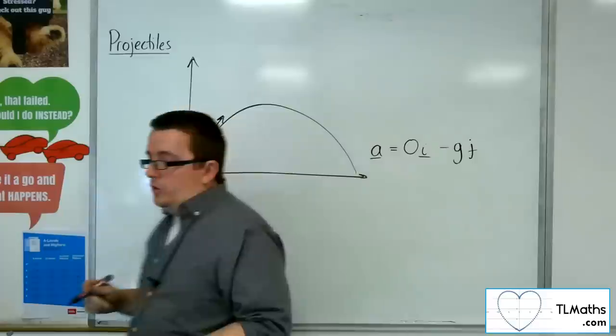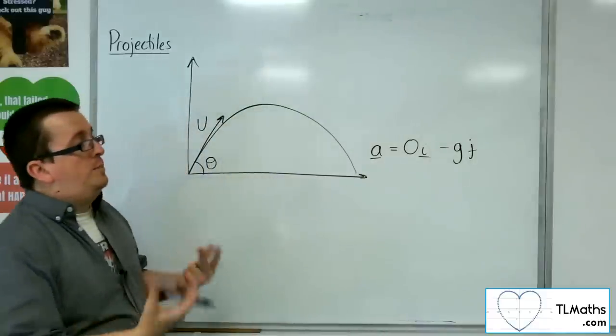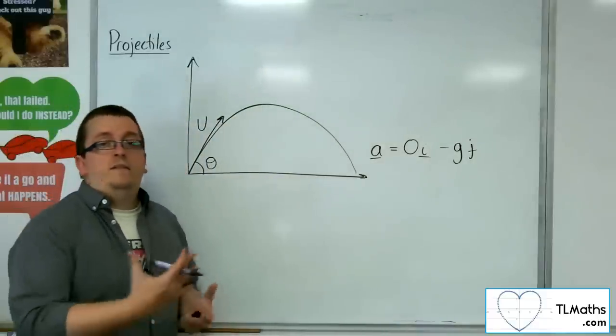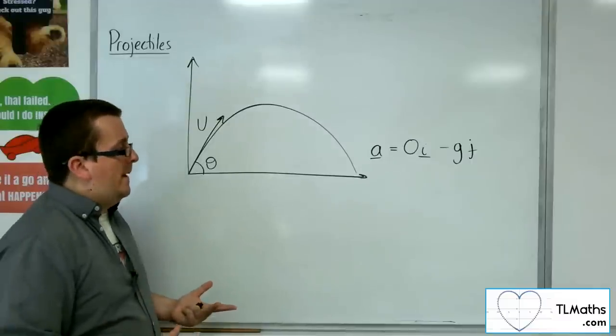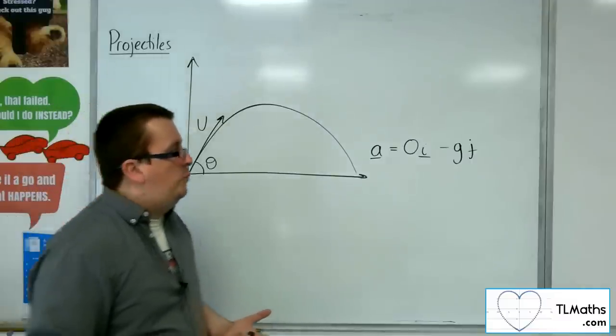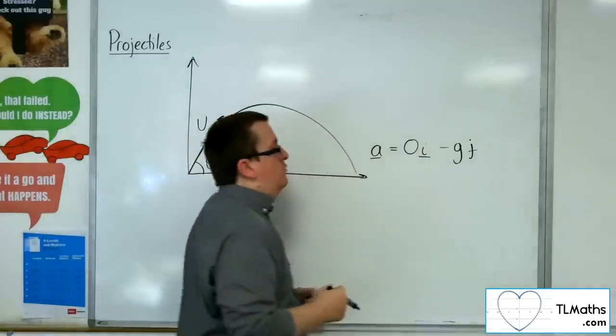So gravity working downwards, g could be taken as 10, 9.8, 9.81, depending on the problem. It will be set for you. So this would be our situation. That is the acceleration.